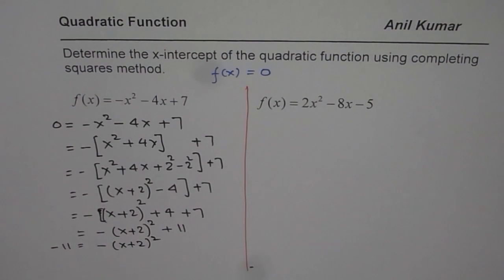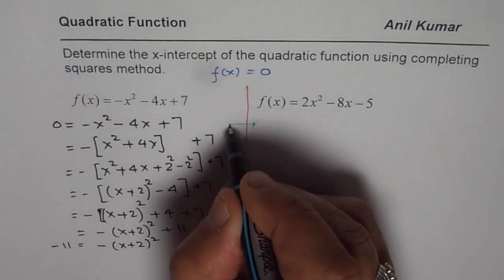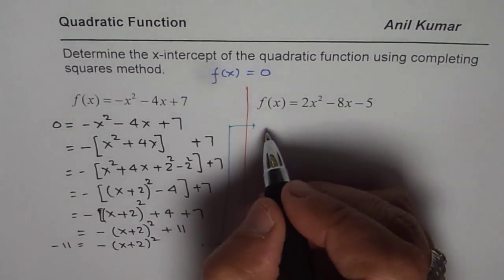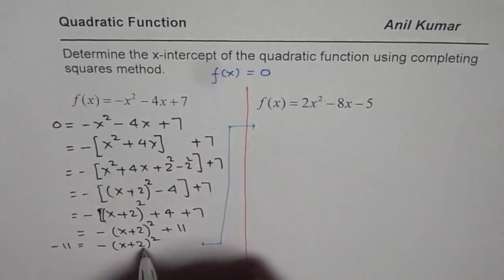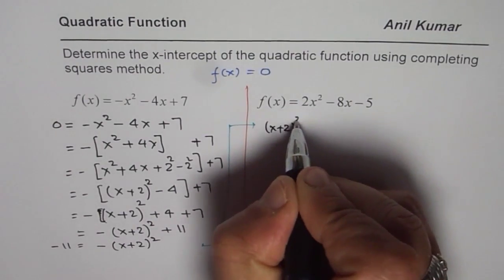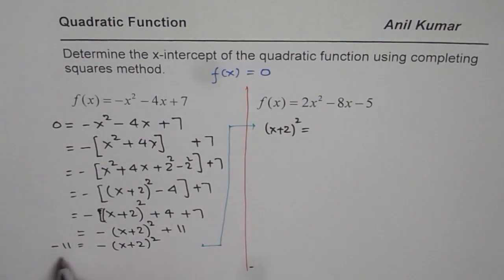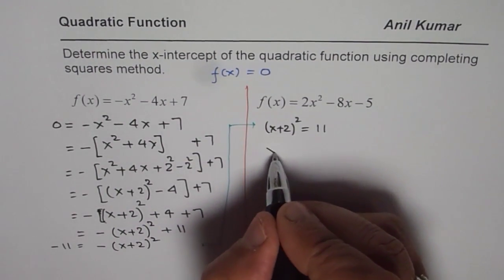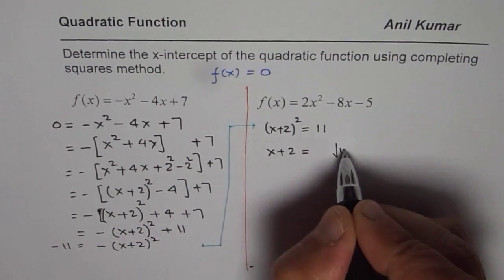Now, to solve this question, what I will do is, now since we have run out of space, I will spill it over to the right side. So, let us now solve it further on the right side. So, we will divide by minus. So, what we get here is, let me write x + 2 whole square first. So, we have (x + 2)² = 11. Now, you square root it. When you square root, you get x + 2 = √11.